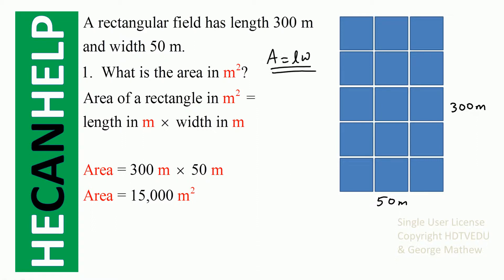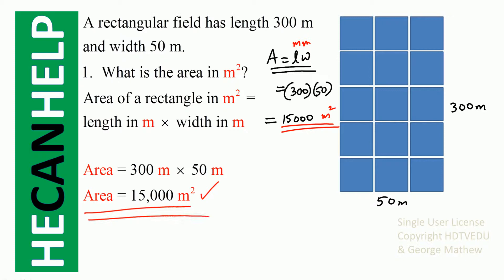Length is 300 and width is 50, so we get 15 followed by three zeros. Length is in meters, width is in meters, so meter times meter is meter squared — 15,000 meters squared. Basically, if you take one meter by one meter, you will be able to fit 15,000 of those.